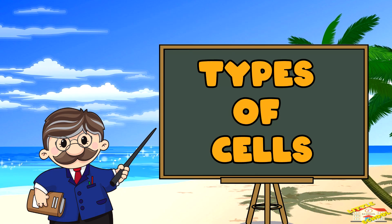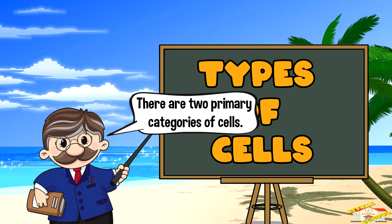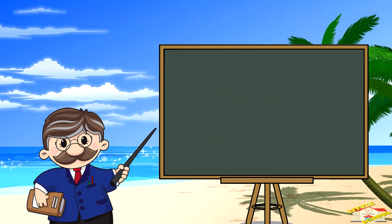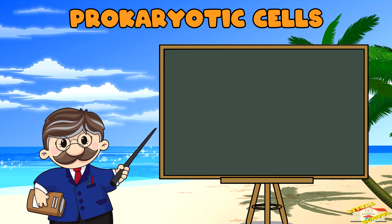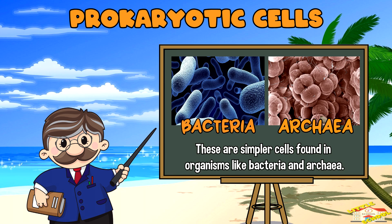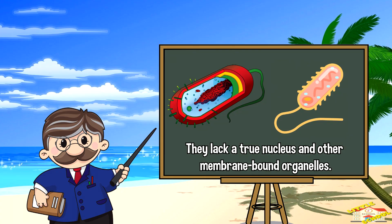Let's go over the types of cells. There are two primary categories of cells. Prokaryotic cells are simpler cells found in organisms like bacteria and archaea. They lack a true nucleus and other membrane-bound organelles.